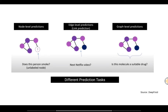We can have different prediction tasks using graphs. One of them is node-level prediction, where you have a set of nodes and you know the properties of certain nodes but not of a particular node — for example, whether a person smokes or not. That is a node-level prediction task.